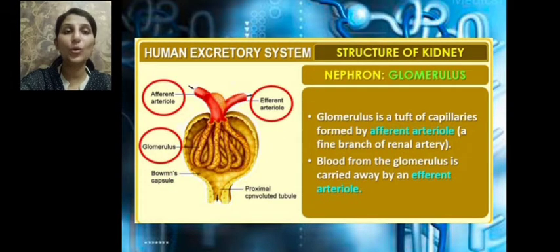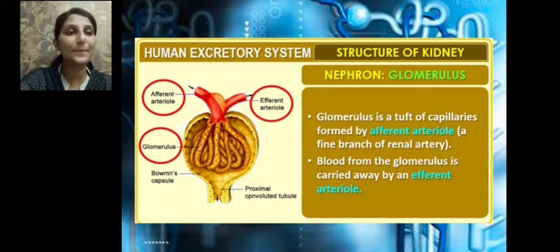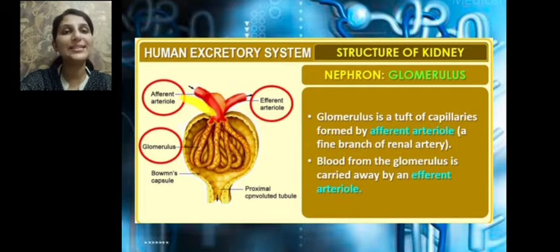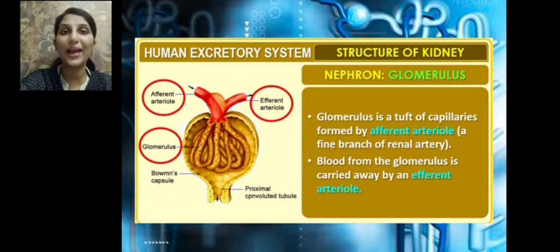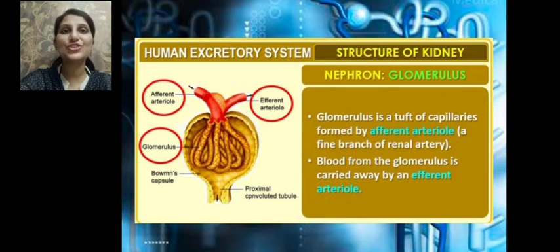The glomerulus is nothing but a tuft of capillaries — a bunch of capillaries formed by the afferent arteriole. An arteriole is a branch of the renal artery, which is a blood vessel that carries blood from the heart to the tissues.